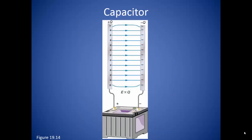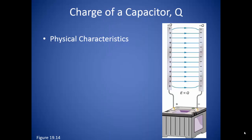We can then connect those plates to a battery. The positive terminal of the battery supplies positive charges to the plate it is connected to, and the negative terminal supplies an equal number of negative charges to the other plate. Since the capacitor has an equal number of positive and negative charges, its overall charge is neutral. We refer to it as storing a charge, Q, because there is now a uniform electric field being produced in between the plates. The electric field between the plates serves as a way to store the energy.